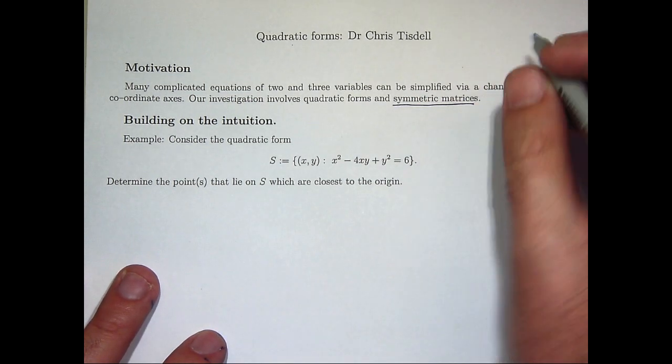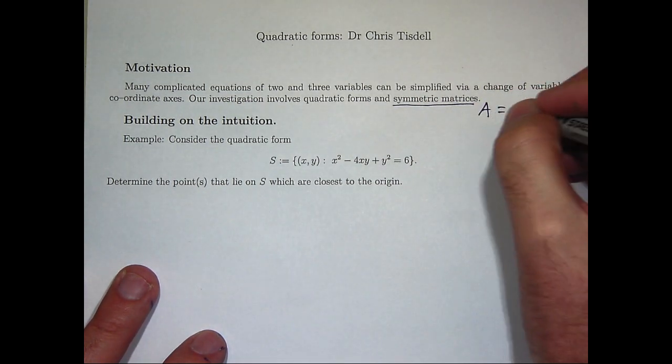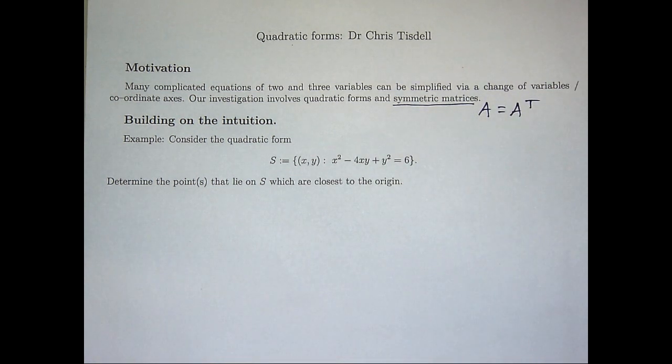Remember a symmetric matrix, say A, is a square matrix such that the transpose equals the original matrix. If I switch row 1 with column 1, row 2 with column 2, etc., I get the same matrix.